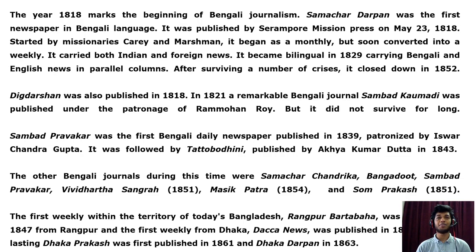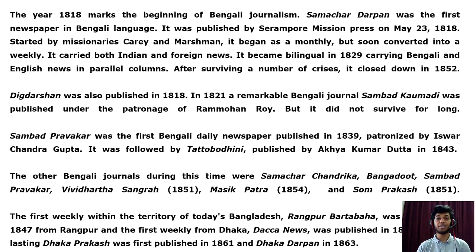Dig Dorshon was also published in 1818. In 1821, a remarkable Bengali journal, Sambad Kaumudi, was published under the patronage of Ram Mohan Roy, but it did not survive for long. Sambad Prabhakar was the first Bengali daily newspaper, published in 1839, patronized by Ishwar Chandra Gupta. It was followed by Tattabodhini, published by Akshay Kumar Dutta in 1843. Other Bengali journals during this time included Samachar Chandrika, Bangodoot, Sambad Prabhakar, Vividharthasangraha, Masik Patrika, and Somprakash. The first weekly within the territory of today's Bangladesh, Rangpur Vartabaha, was published in 1847 from Rangpur, and the first weekly from Dhaka, Dhaka News, was published in 1856. The long-lasting Dhaka Prokash was first published in 1861 and Dhaka Darpan in 1863.